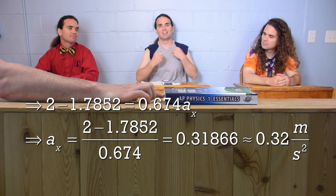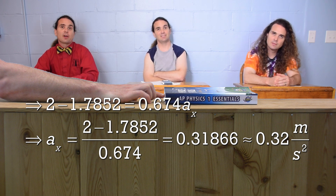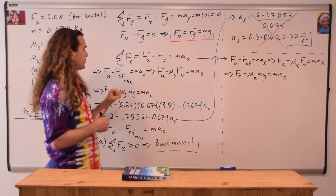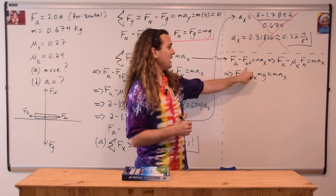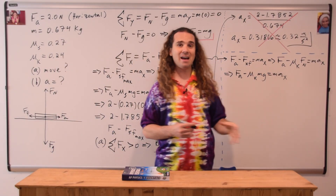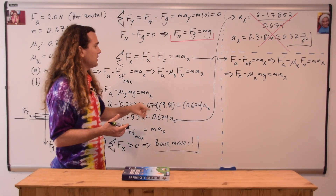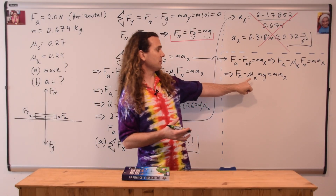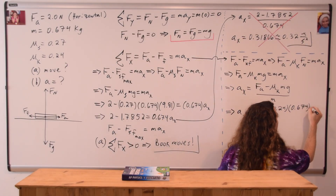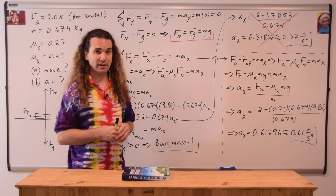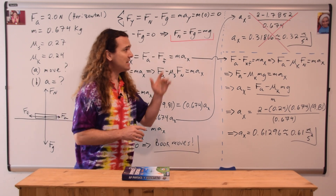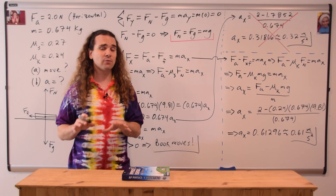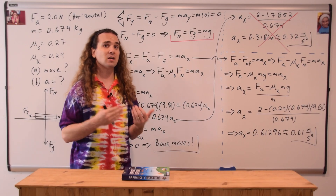The book is moving now, so it's not static friction anymore. We need to use the coefficient of kinetic friction instead. Because the equations for the maximum force of static friction and the force of kinetic friction are so similar, it's simply the difference between having a coefficient of static friction and a coefficient of kinetic friction. The acceleration of the book in the x direction is 0.61 meters per second squared, not 0.32 meters per second squared. Because when an object is sliding relative to a surface, we need to use kinetic friction and not static friction.